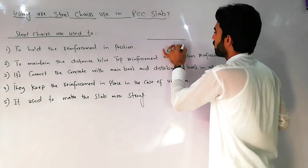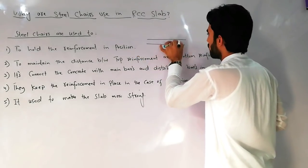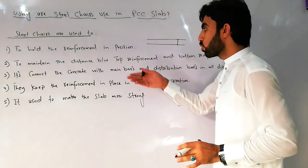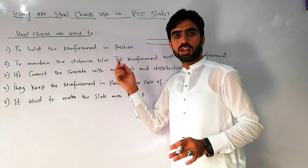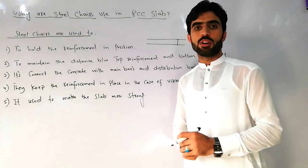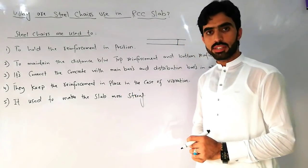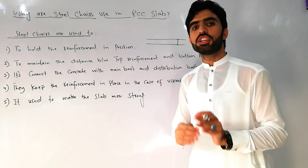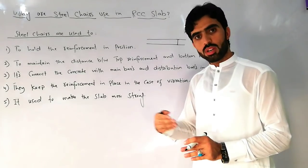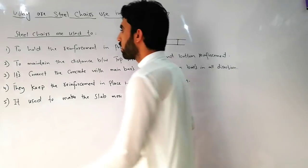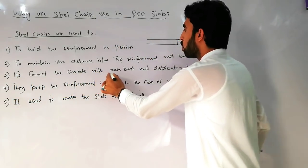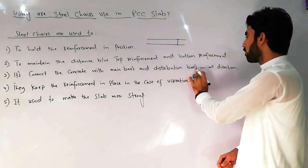We provide two reinforcement meshes — one on each side — and sometimes we also provide top reinforcement and bottom reinforcement in raft foundations. So we can also provide steel chairs in RCC slabs and raft foundations.